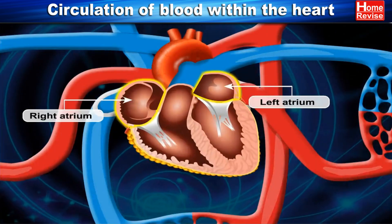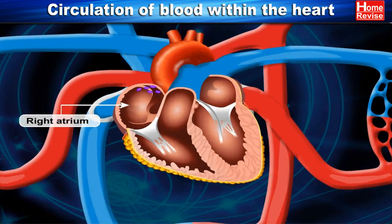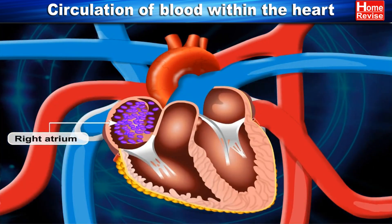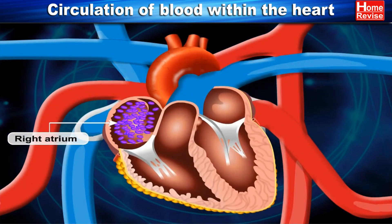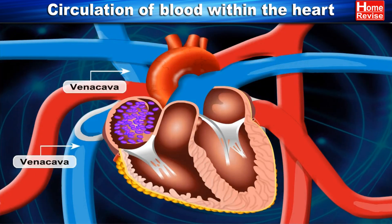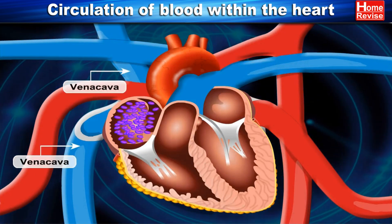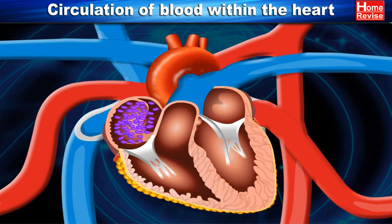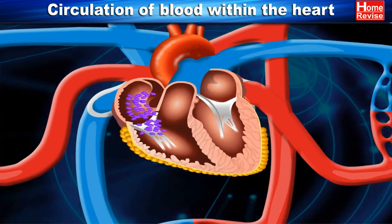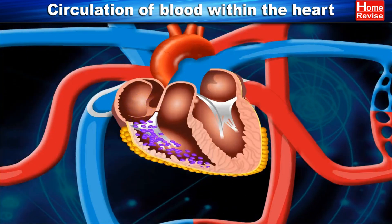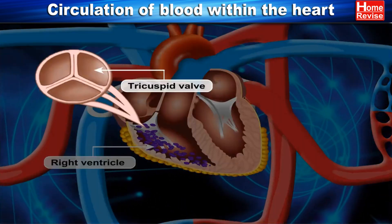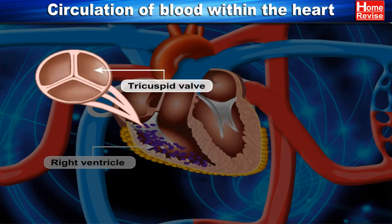The muscles of the atria are relaxed and the right atrium receives deoxygenated blood collected from different organs of the body by large veins called the vena cava. The right atrium then contracts and pours the deoxygenated blood into the right ventricle, guarded by the tricuspid valve.